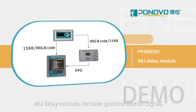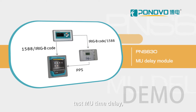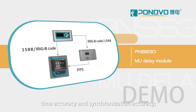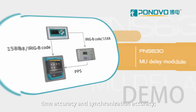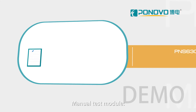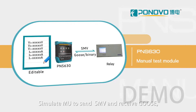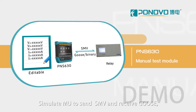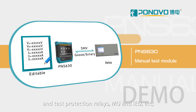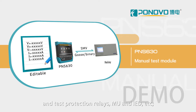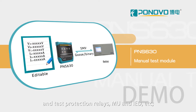The MBU delay module receives synchronization signals and tests MBU time delay, time accuracy, and synchronization accuracy. The manual test module simulates MBU to send SMV and receive GOOSE, used for testing protection relays, MBU, IED, and other devices under test.